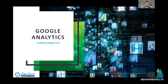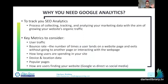Let's talk about Google Analytics. You get there by going to analytics.google.com. Google Analytics really tracks your SEO — it's the process of collecting, tracking, and analyzing data so you can figure out how to grow your website traffic. When you're looking at the report, there are a lot of different metrics. Here are some important ones for beginners: user traffic in terms of where they're coming from, how long they're spending on your website, and the bounce rate.